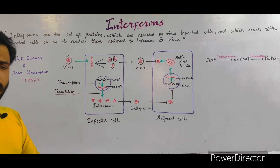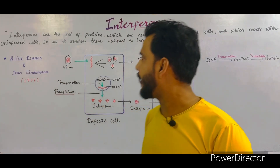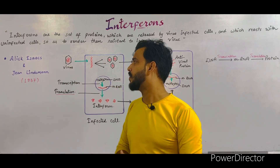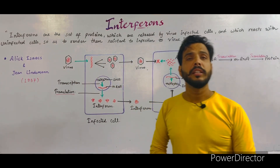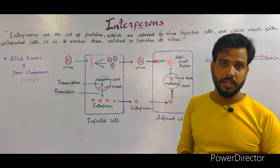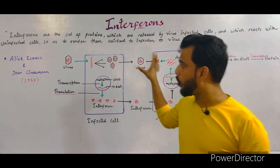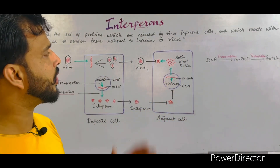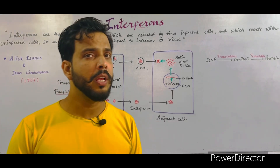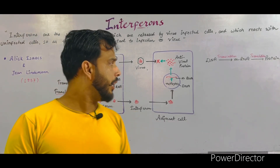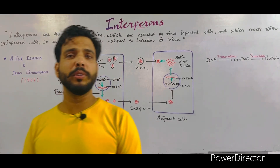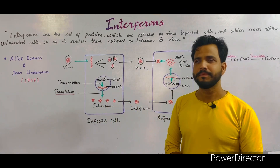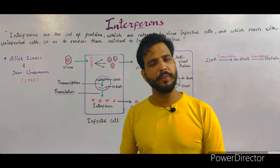Two scientists named Alec Issac and Jean Lindeman discovered interferons for the first time in 1957. So that was all about the interferon — the definition and the diagram. I hope both are very clear to you. In my next lecture, I will cover a new topic. Thanks for watching, and have a good day.